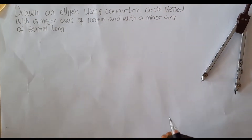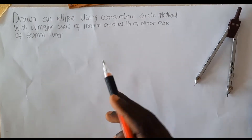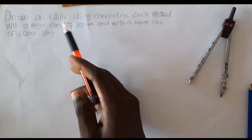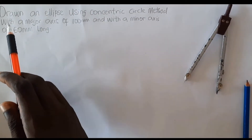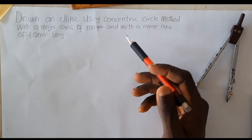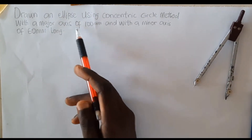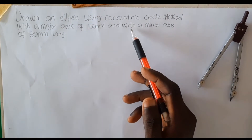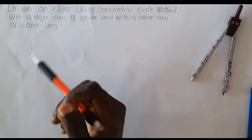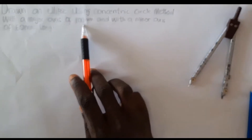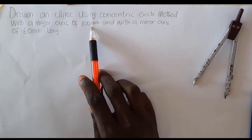Welcome to today's TD class. In this video we'll be drawing an ellipse using the concentric circle method. The question before us is: draw an ellipse using the concentric circle method with a major axis of 100 millimeters and a minor axis of 60 millimeters long.